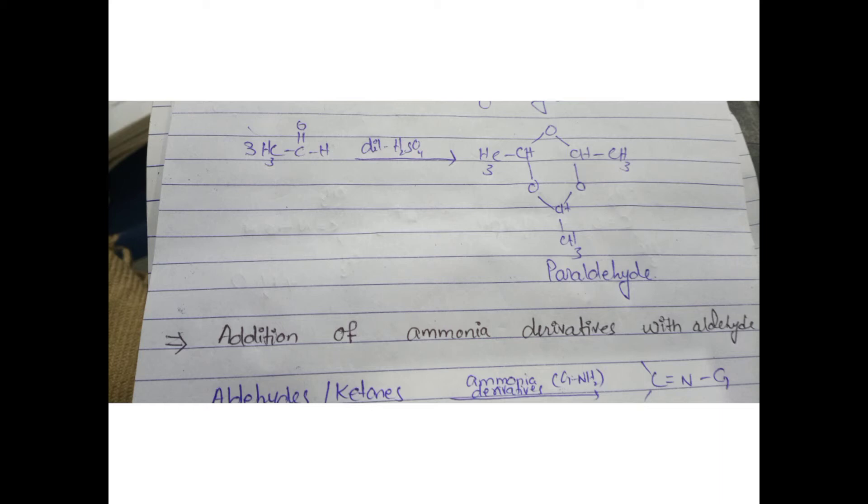This is paraldehyde formation. Next is the addition of ammonia derivatives with aldehydes and ketones in the presence of ammonium derivatives. Ammonia derivatives can be H2N with an alkyl group attached, so different derivatives can be attached.